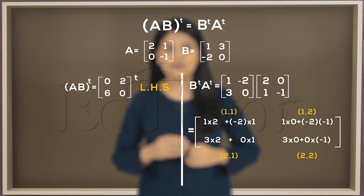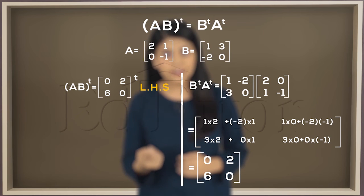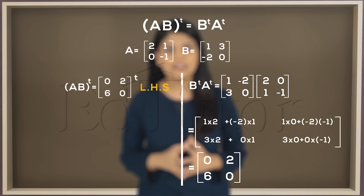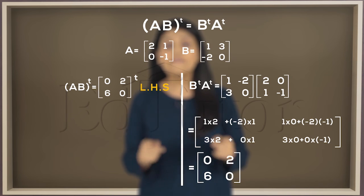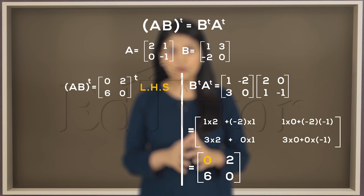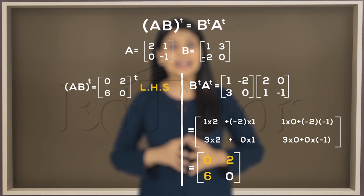Fill the other 2 positions as well. By solving further and adding up the values, we get this. We have our final matrix: 0, 2, 6 and 0.